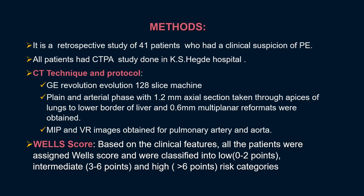Regarding the Wells score, based on the clinical features, all patients were assigned a Wells score and classified into low, intermediate, and high risk. Low risk was defined as 0 to 2 points, intermediate as 3 to 6 points, and high risk as more than 6 points.